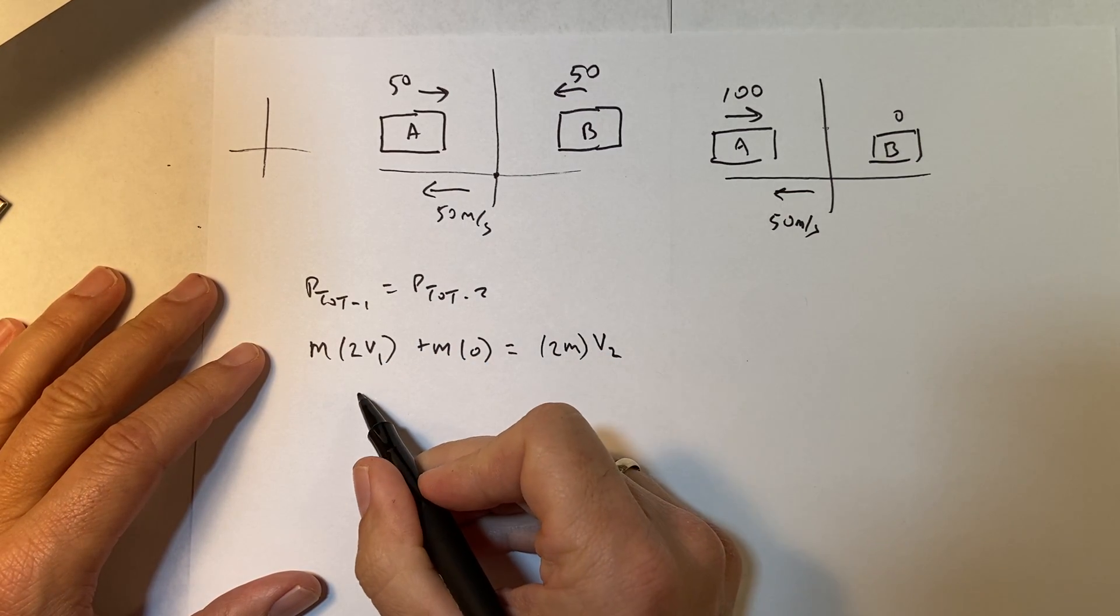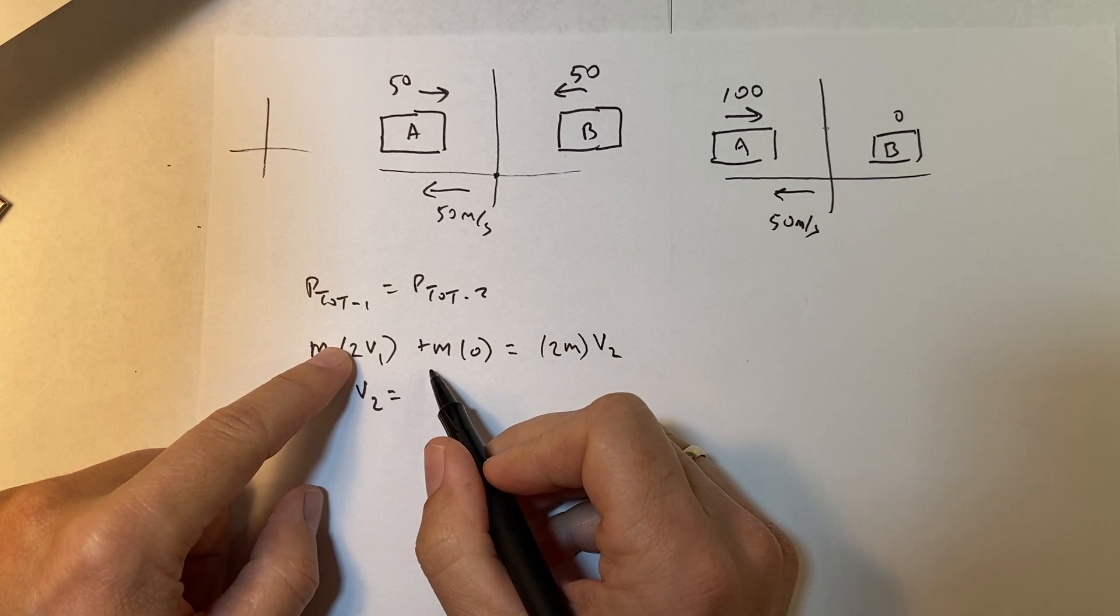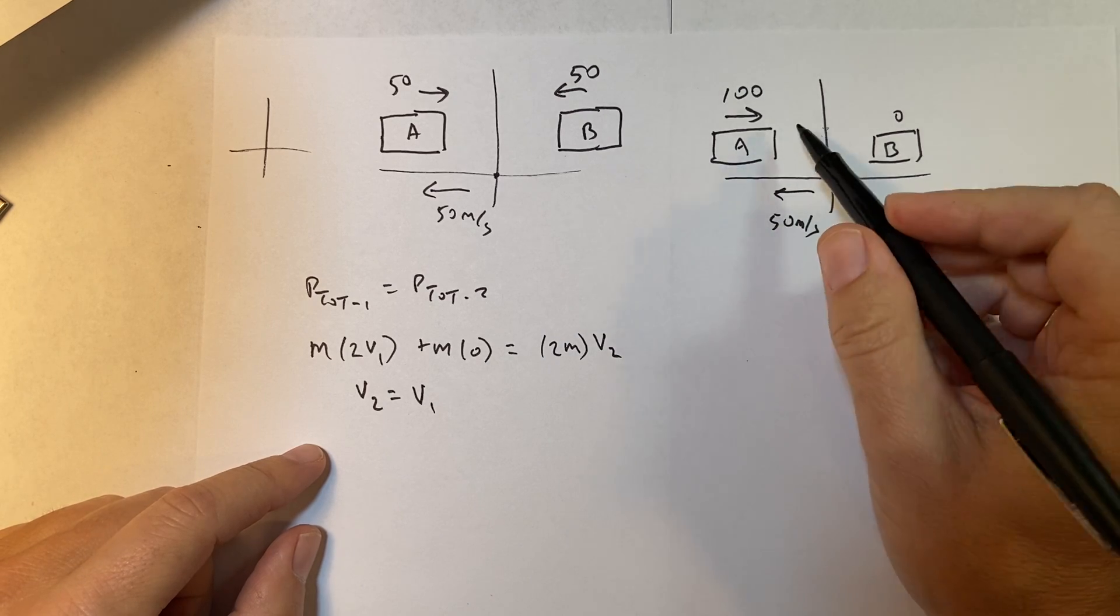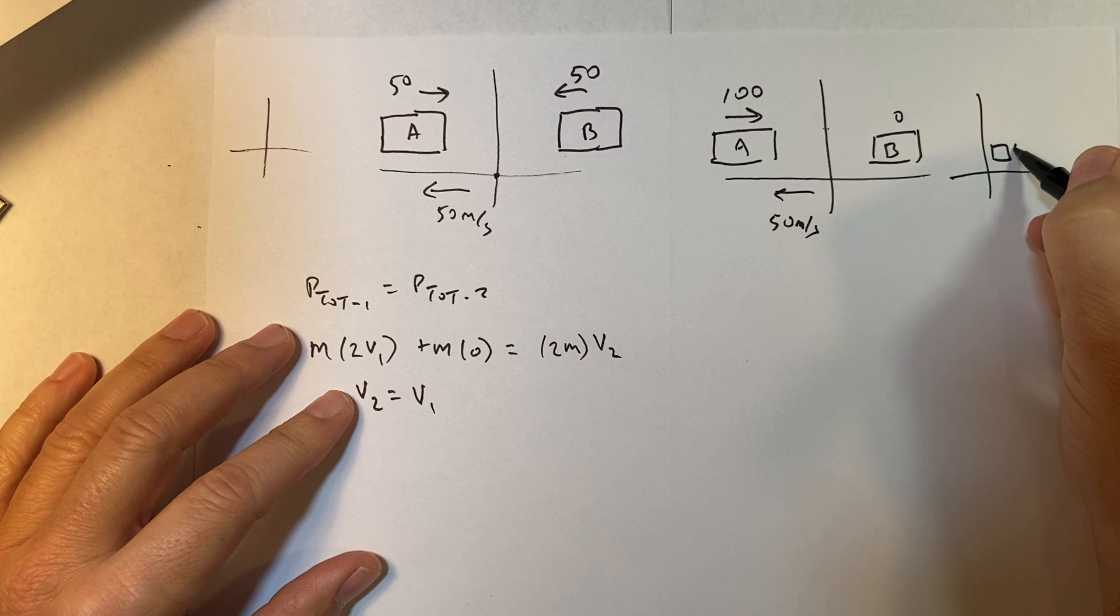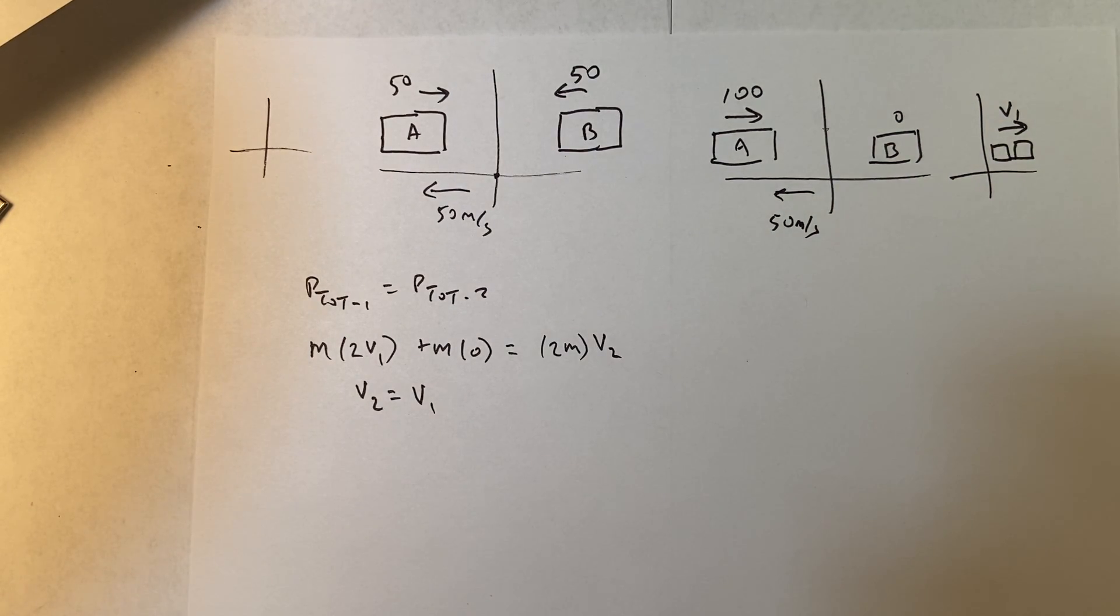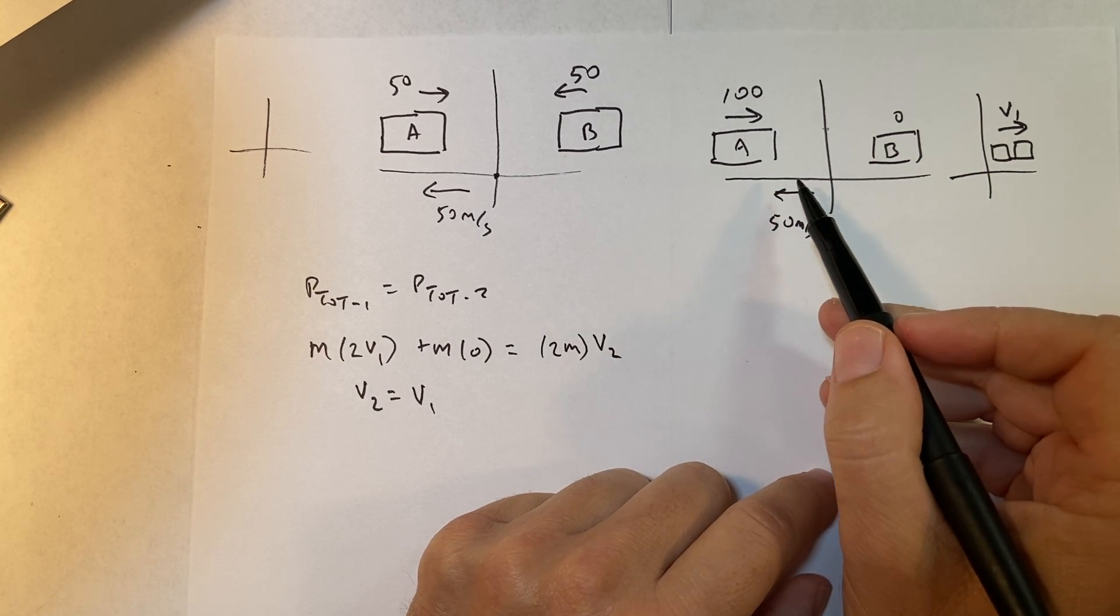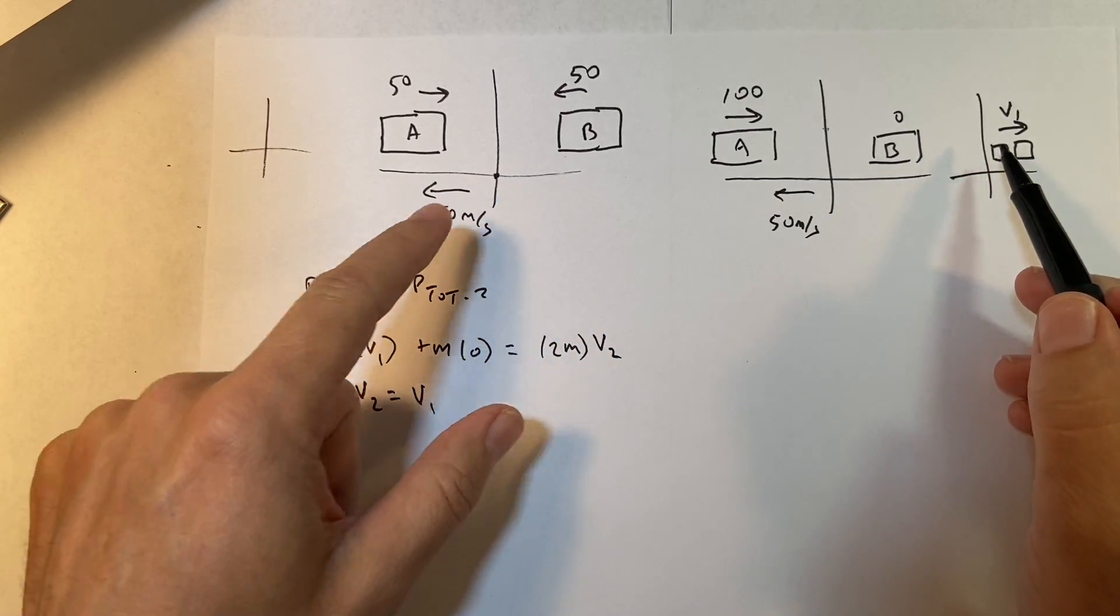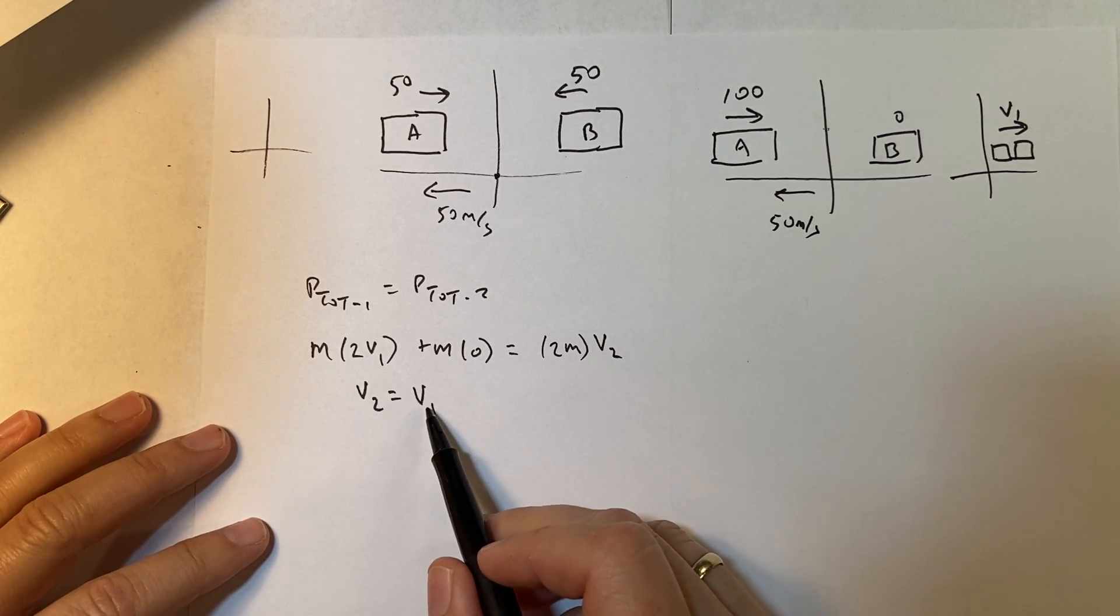So the masses cancel, and I get V2 equals V1. So after the collision, it looks like this in my coordinate system. I have the two cars stuck together, but they're moving with the velocity V1. And that makes sense, because if this reference frame is moving to the right at a speed of V1, then those are like stationary in the other frame. So all these situations agree with each other, and that's important. But this is important too, because now I need to look at the change in kinetic energy.